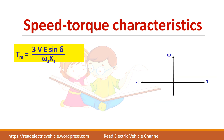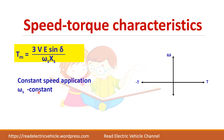Now let us see the speed-torque characteristics. Since this is a synchronous motor used for constant speed applications, the speed is constant, so the characteristics will be a constant horizontal line. In the positive torque region you get the motoring mode, and for negative torque you get the braking mode.